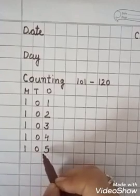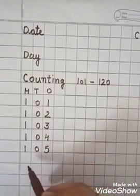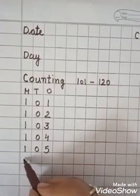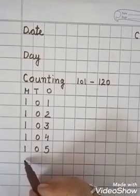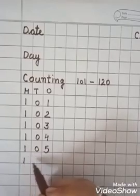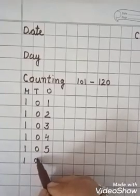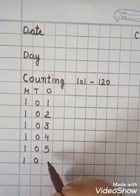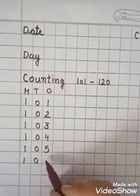105. Now here: 1, 0 — very good, try it. What comes here next?